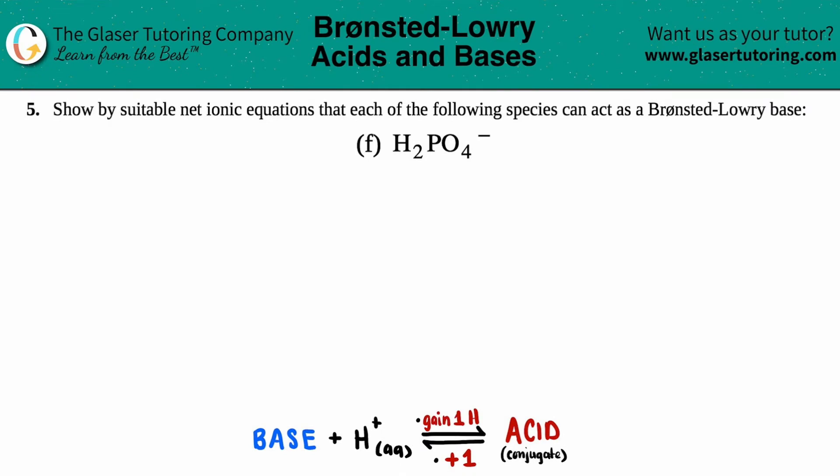Number five, show by suitable net ionic equations that each of the following species can act as a Brønsted-Lowry base. And then we have letter F. So in this case, we have to just show that H₂PO₄⁻ can act as a Brønsted-Lowry base with a net ionic equation.